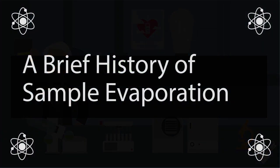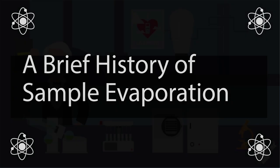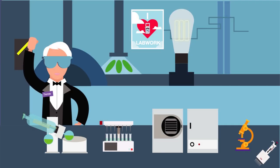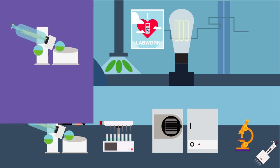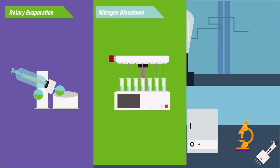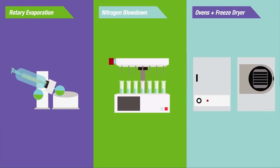Thermo Fisher presents a brief history of sample evaporation. Years ago, lab technicians used a multitude of pre-vacuum concentration processes to get the job done. These included rotary evaporation, nitrogen blowdown, the use of ovens, and freeze drying.